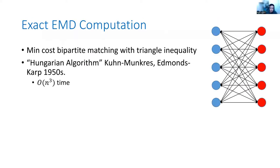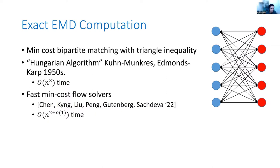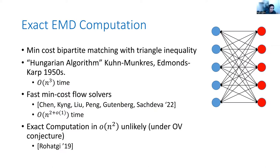For context, what is known about exactly computing the value of EMD, not even in a stream but offline? In essence, EarthMover Distance is just a min-cost perfect bipartite matching problem, with the promise that the weights satisfy the triangle inequality. Min-cost bipartite perfect matching can be solved with the Hungarian algorithm in n-cubed time. You can also formulate this as a min-cost flow problem, and recent breakthroughs show almost n-squared time algorithms for exact computation. Fine-grained complexity lower bounds show it's unlikely to break n-squared runtime due to a reduction to the orthogonal vectors conjecture, so n-squared is roughly the expected runtime.